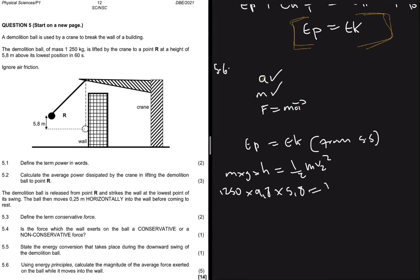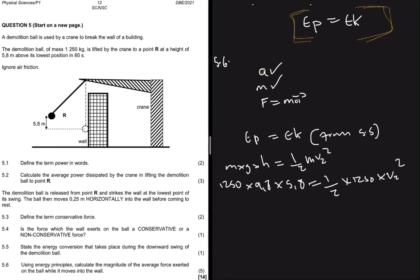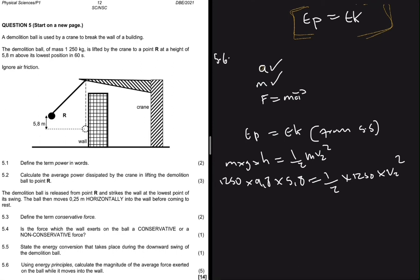So the mass 1250, gravity is 9.8, the height is 5.8, and then one over two, the mass is 1250, and then we have velocity 2 squared. If I put the left-hand side of my calculator I get 71,050, which is equals to 1250 divided by 2, and that is 625 v_2 squared.